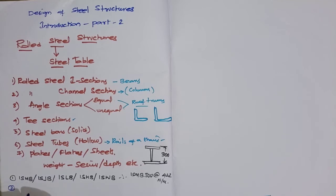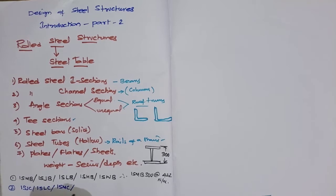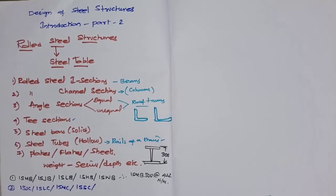The second classification is channels: Indian Standard Junior Channel (ISJC), Indian Standard Lightweight Channel (ISLC), Indian Standard Medium Channel (ISMC), and Indian Standard Special Channel (ISSC). Moreover, rolled steel I-sections can also be used as channel sections — the only difference is placement. If an I-section is placed horizontally it acts as a flexural member, and if placed vertically it acts as a compression member.